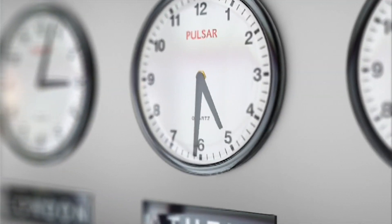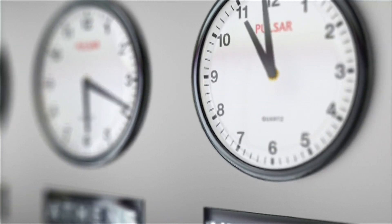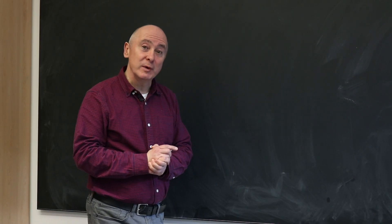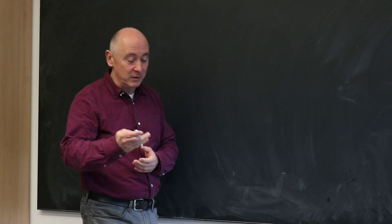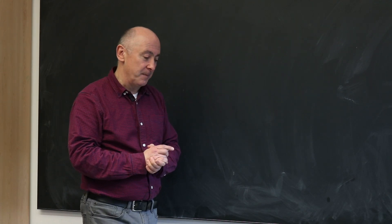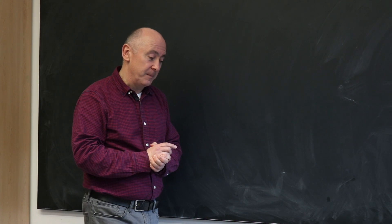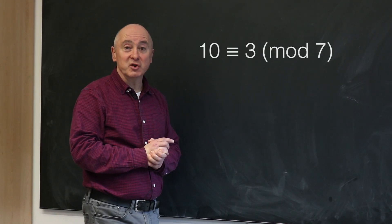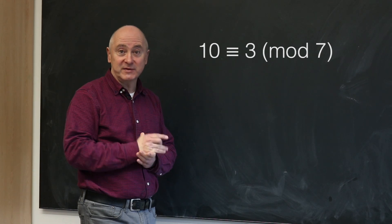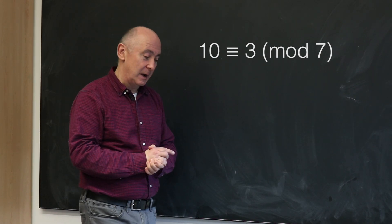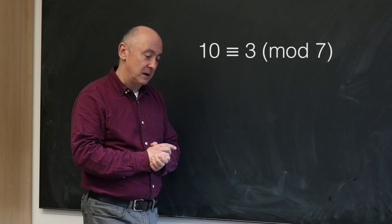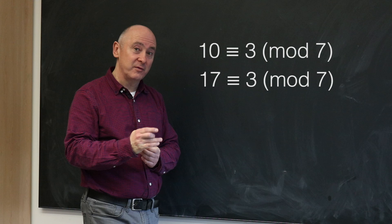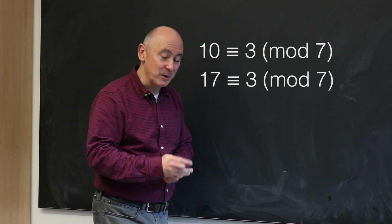We tend to only record the time in terms of up to 12, so 1500 hours is the same as 3 o'clock because you can subtract off 12 and you get to 3. For example, 10 is congruent to 3 modulo 7 because if you subtract off 7 from 10 you get 3, and 17 is congruent to 3 mod 7 because you can subtract off twice 7 and you get to 3.